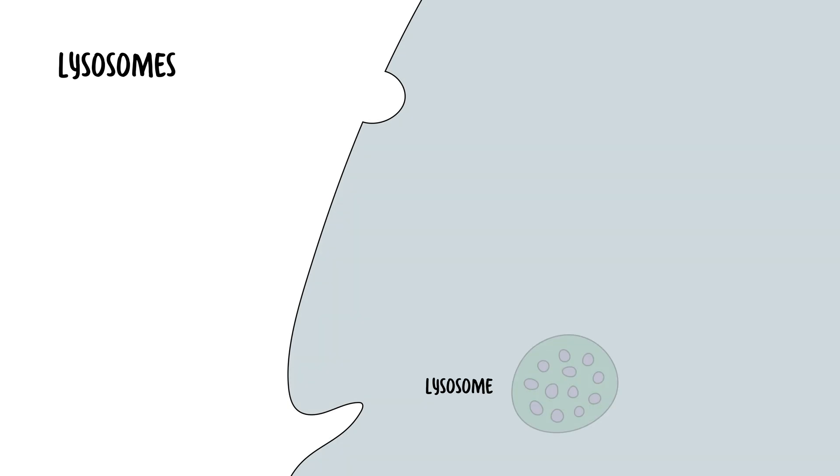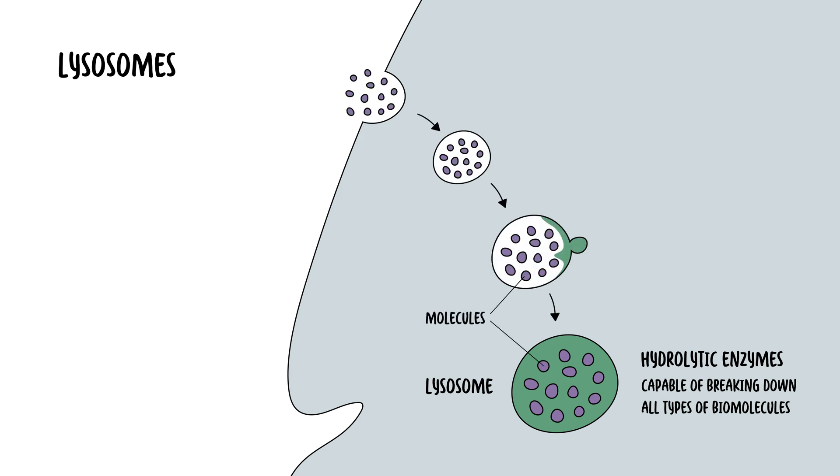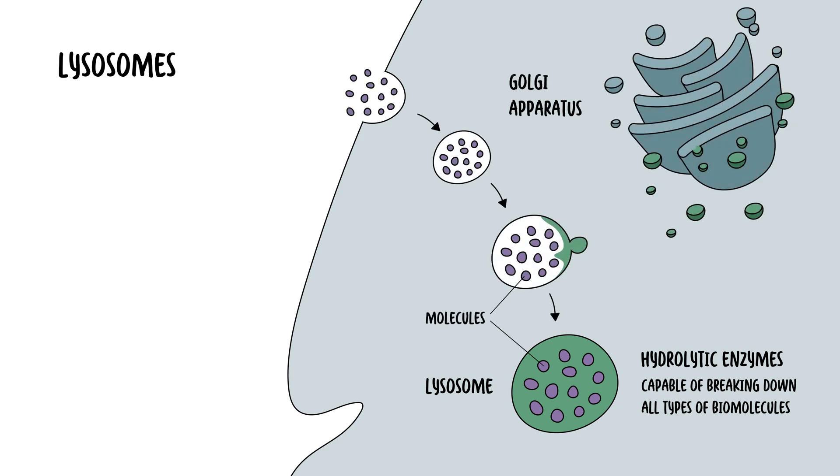And so, talking about lysosomes, lysosomes are spherical vesicles containing hydrolytic enzymes, capable of breaking down all types of biomolecules. They are bounded by a single membrane. In this diagram, you can see that the Golgi apparatus is giving this sort of endosome some hydrolytic enzymes to form the lysosome.